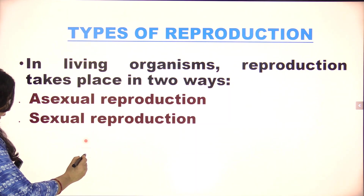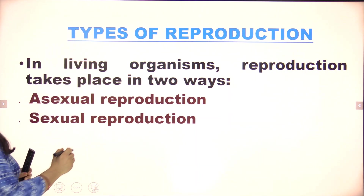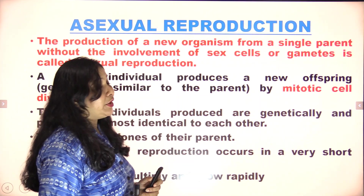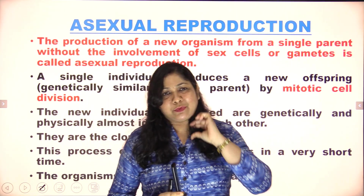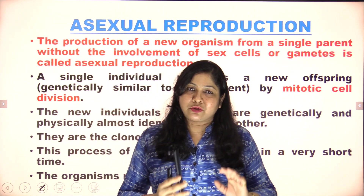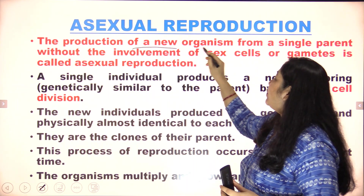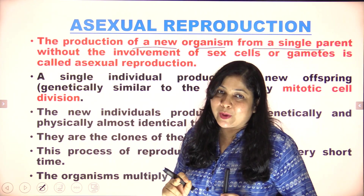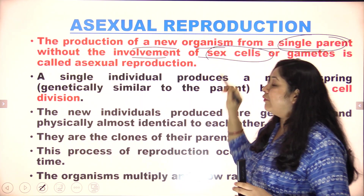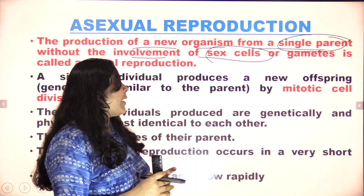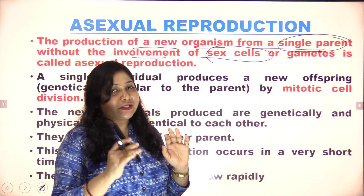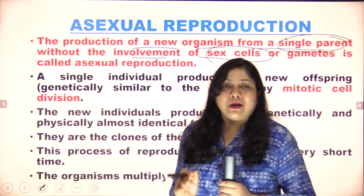In living organisms, reproduction takes place in two ways: asexual and sexual. So what is asexual reproduction? It is a process of reproduction where a single parent is sufficient to produce a like or xerox copy of themselves. The production of new organisms from a single parent — here only a single parent is required, without the involvement of sex cells.